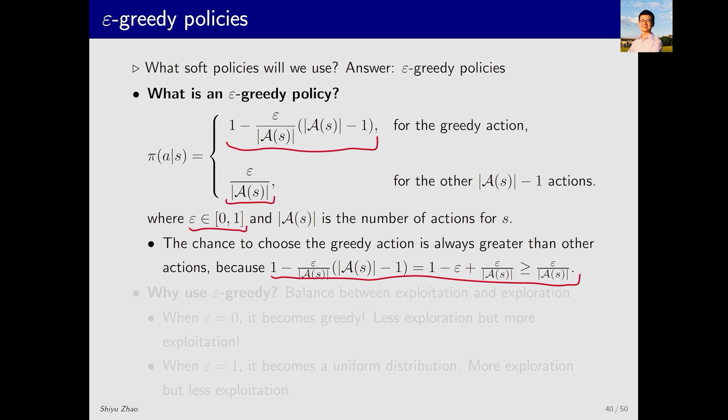What does it mean? It implies that although I assign some positive probability to other actions, I still prioritize the greedy action with the highest probability. The above are some introductions to the concept of epsilon greedy.